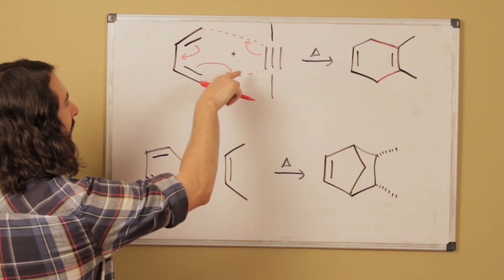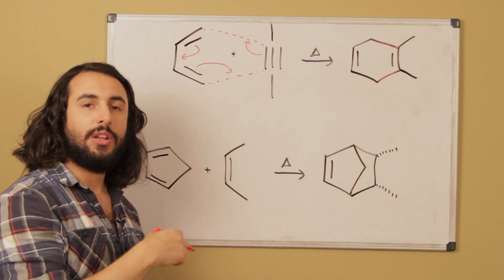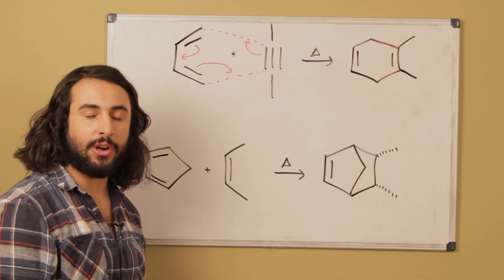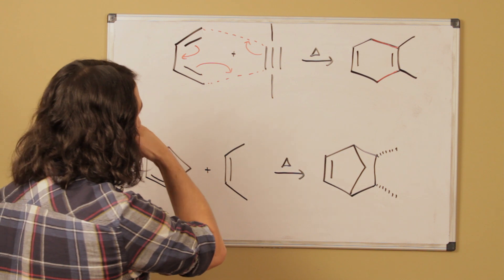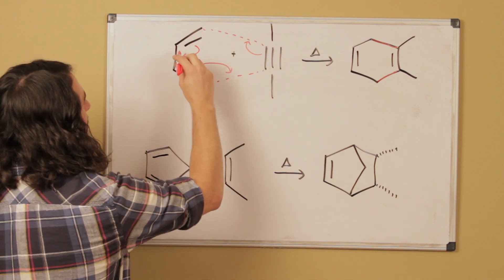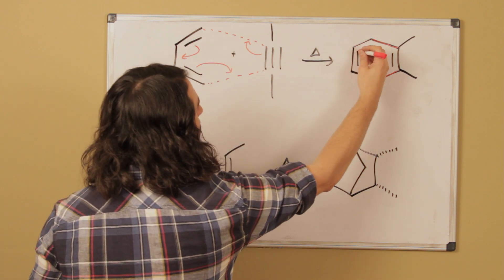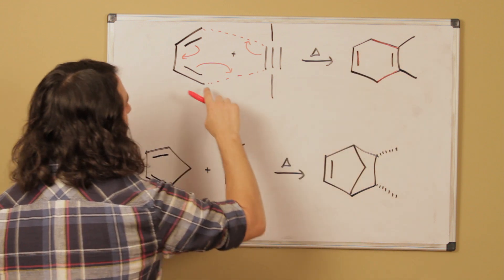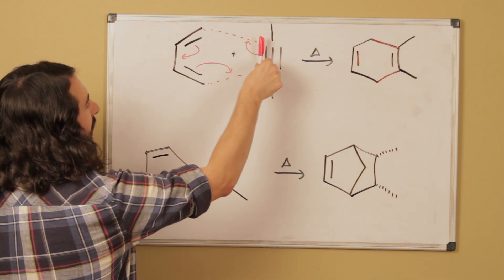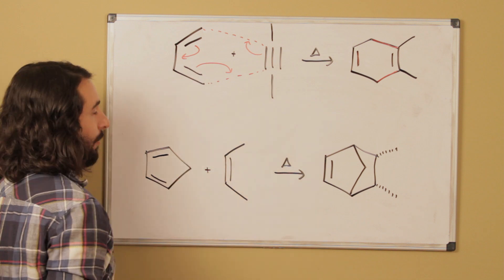So once again it doesn't matter which way we cyclize these because they're actually not moving in one direction or another, it's a concerted reaction, but this pi bond has gone here so that's this new pi bond right there and then this pi bond has become this sigma bond and this pi bond has become this sigma bond.